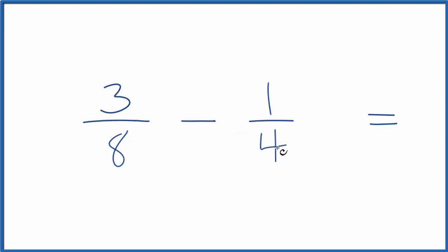So here I know that 4 goes into 8 twice because 4 times 2, that would equal 8. That would give me the common denominator. But I have to also multiply the top by 2.